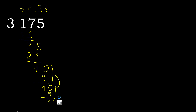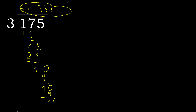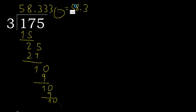This digit repeats, so we get a repeating decimal. Therefore 175 divided by 3 equals 58.3 repeating — the 3 repeats.